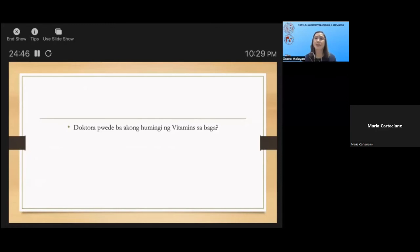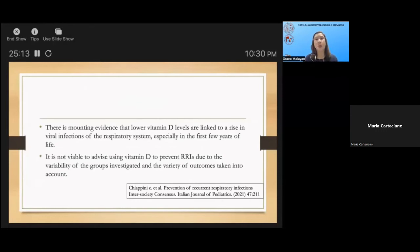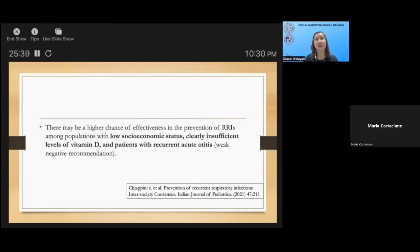Who among you have been asked by this question: 'Doktora, pwede ba akong humingi ng vitamins?' For sure, most of us have been asked this question. Theoretically, based on the study of Chiappini et al., there is no proof that vitamin A and E deficiency make kids more susceptible to respiratory illnesses. However, there is mounting evidence that lower vitamin D levels are linked to a rise in viral infections of the respiratory system, especially in the few years of life. It is not viable to advise using vitamin D to prevent recurrent respiratory infections due to the variability of groups that have been investigated and variety of outcomes taken into account, but there may be higher chance of effectiveness in prevention among populations with low socioeconomic status, clearly insufficient levels of vitamin D, and children with recurrent otitis media.